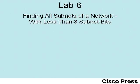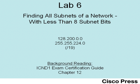Hello and welcome to ICND1 Lab 6, finding all subnets of a network with less than 8 subnet bits. This video shows how to find all the subnets of Class B network 128.200.0.0 with mask 255.255.224.0. If you're using the Cisco Press Exam Certification Guides, this video is best used while you're reading ICND1 Chapter 12.